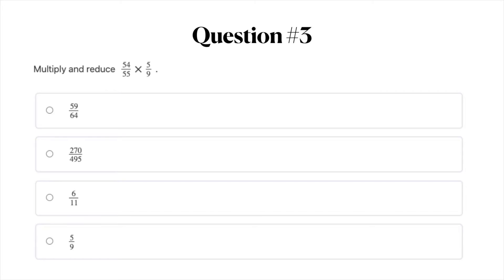Question number three. Multiply and reduce 54 over 55 times 5 over 9. Your answer options are A, 59 over 64, B, 270 over 495, C, 6 over 11, and D, 5 over 9. Go ahead and pause the video here and when you're ready you can move on to question number four.